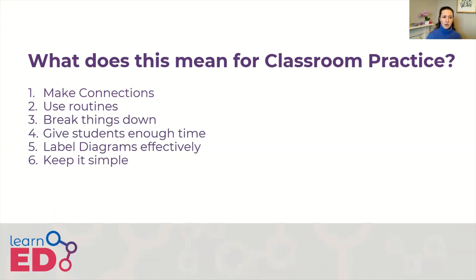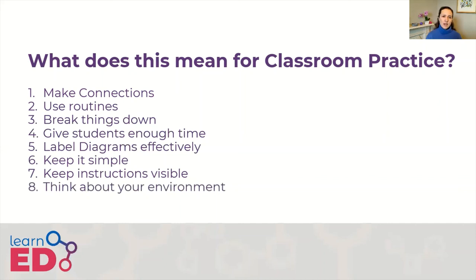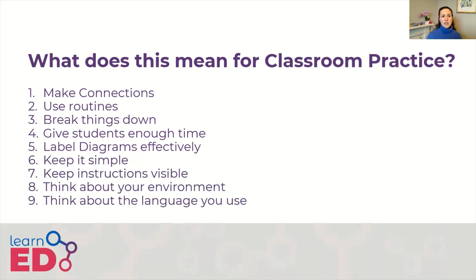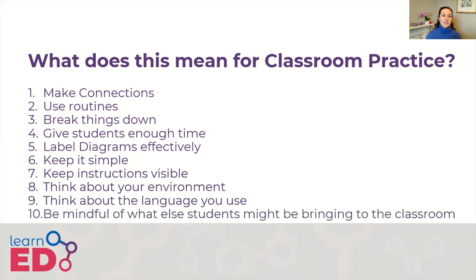Seven: keep instructions visible so people don't have to hold them in their head — either print them out or put them on the board. Eight: think about your environment and how much information is in it, and whether it is overloading some pupils. Nine: think about the language you use, particularly in subjects with a lot of subject-specific vocabulary pupils may not yet be confident with — when using new vocabulary, repeat definitions and keep language as simple as possible. Ten: be mindful about what else pupils might be bringing to the classroom — if they've just come in from break, there may be issues using up working memory space.